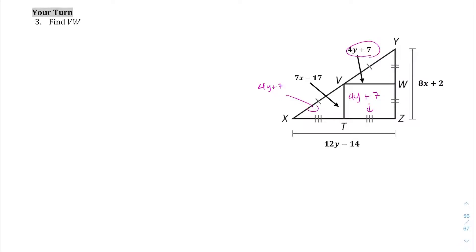Well, the full length we're told is 12Y minus 14, so let's set up the equation that we need. It's going to be 4Y plus 7 plus 4Y plus 7 is equal to the full length, 12Y minus 14.